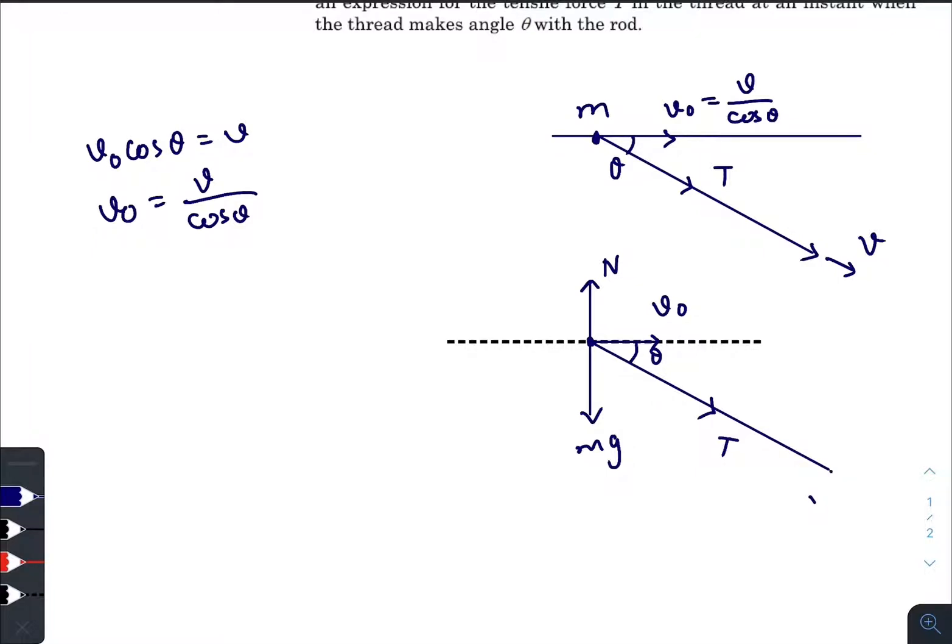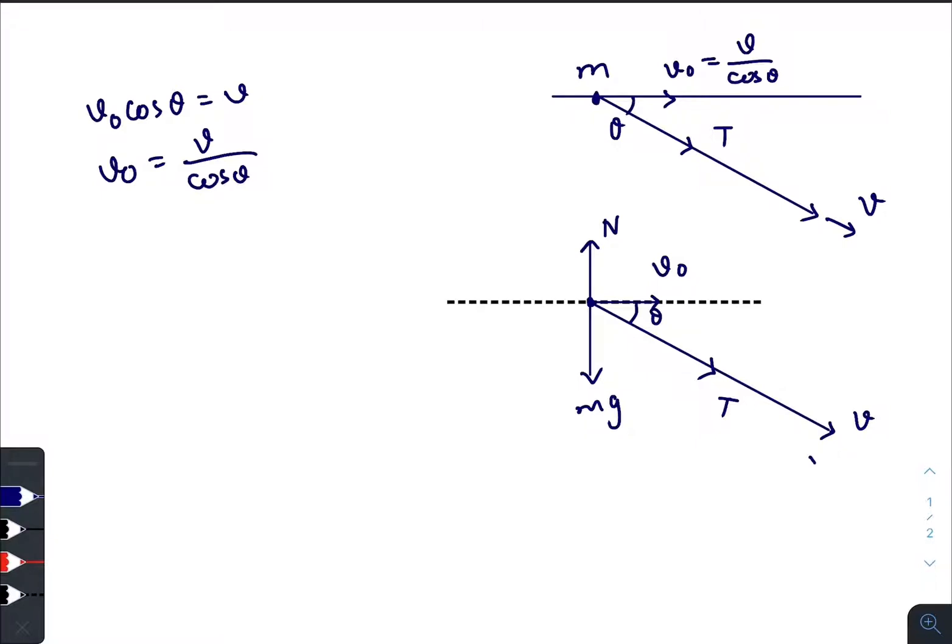This speed is V0, and the speed of this point is V. So there is no vertical motion of the mass, so net force in the vertical direction is zero. So the normal equals Mg plus T sine theta. This is our first equation.